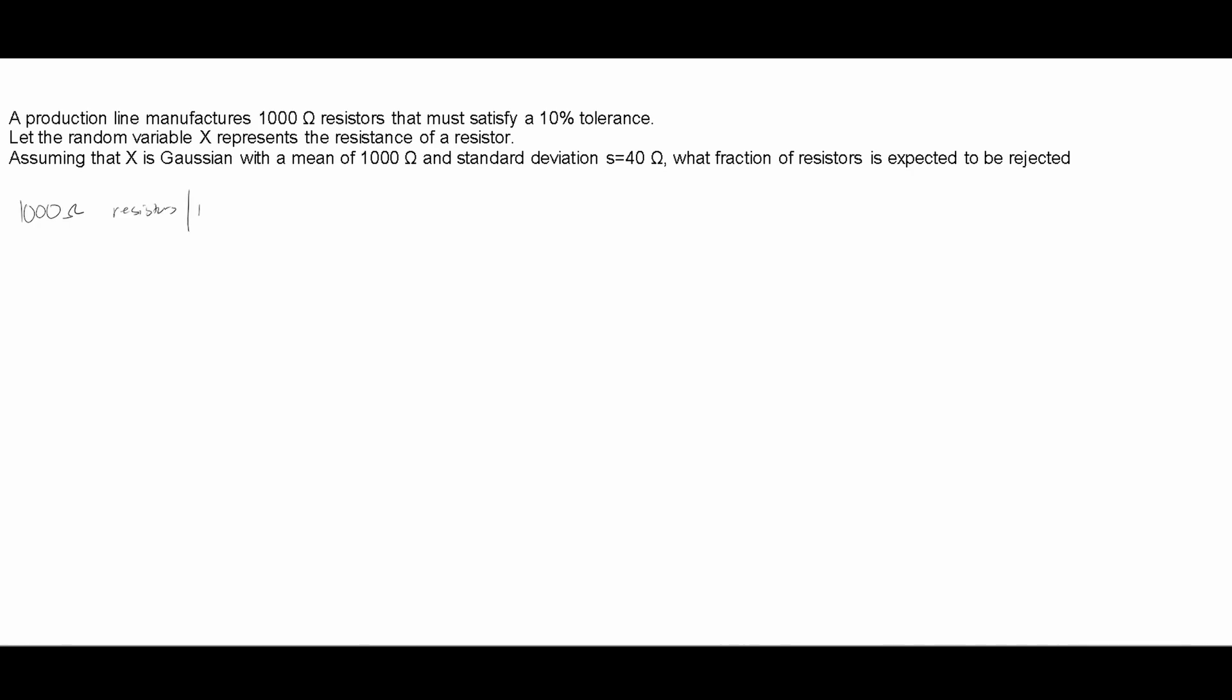It needs to have 10% tolerance. We can let the random variable X, so we'll do random equals X, make sure you're separating all these, represent the resistance of a resistor.